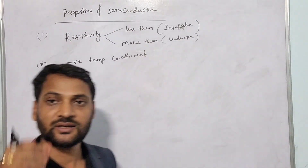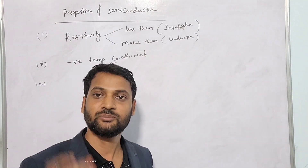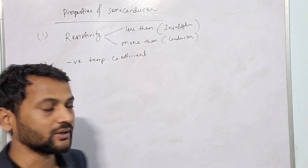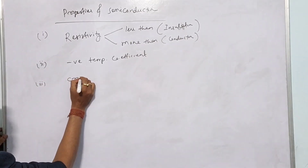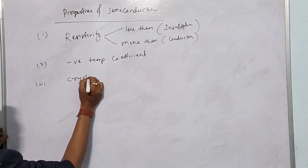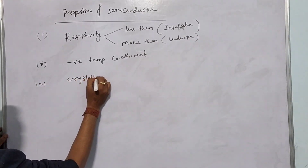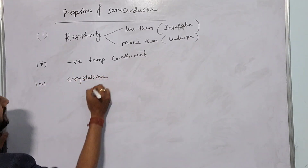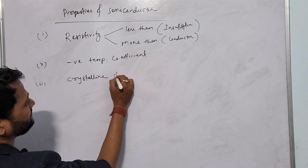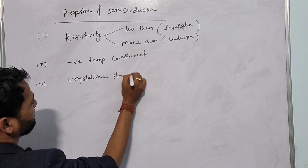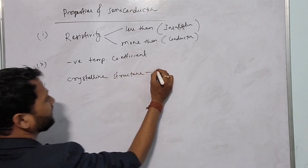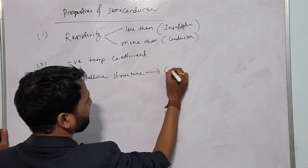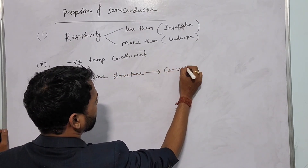The third point: semiconductor has a crystalline structure and the bond is covalent. That means the structure is crystalline and the bond is a covalent bond.